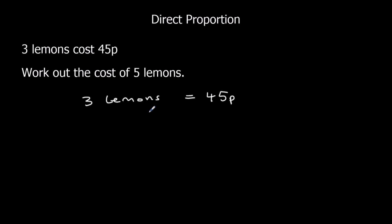So if I divide the amount of lemons by 3, the cost will be divided by 3. So 1 lemon is 45 divided by 3, which is 15p.